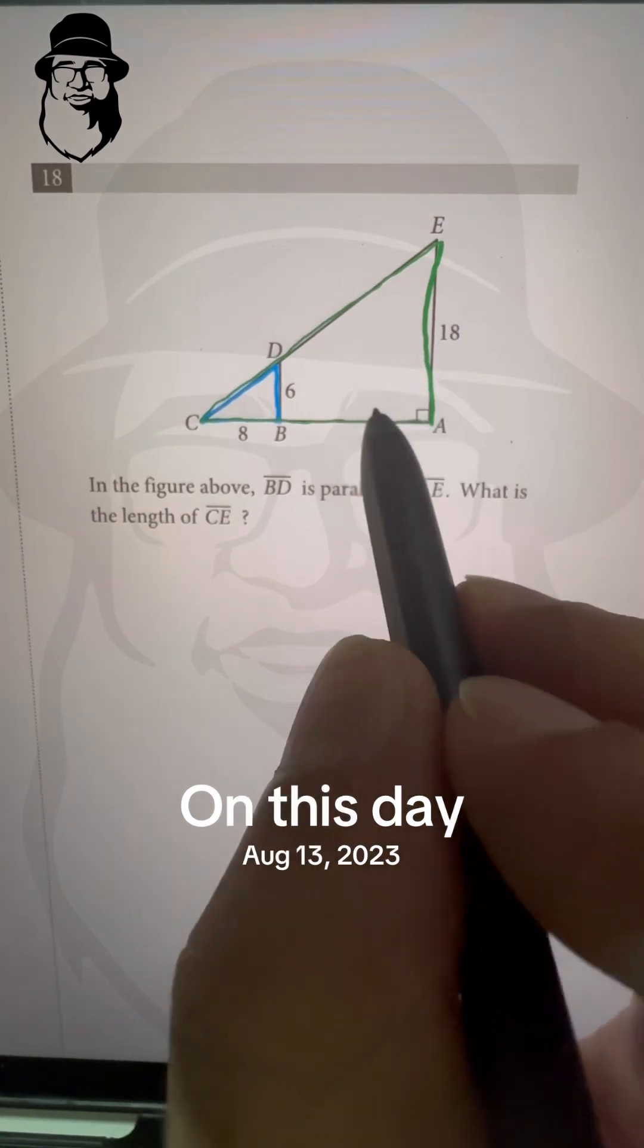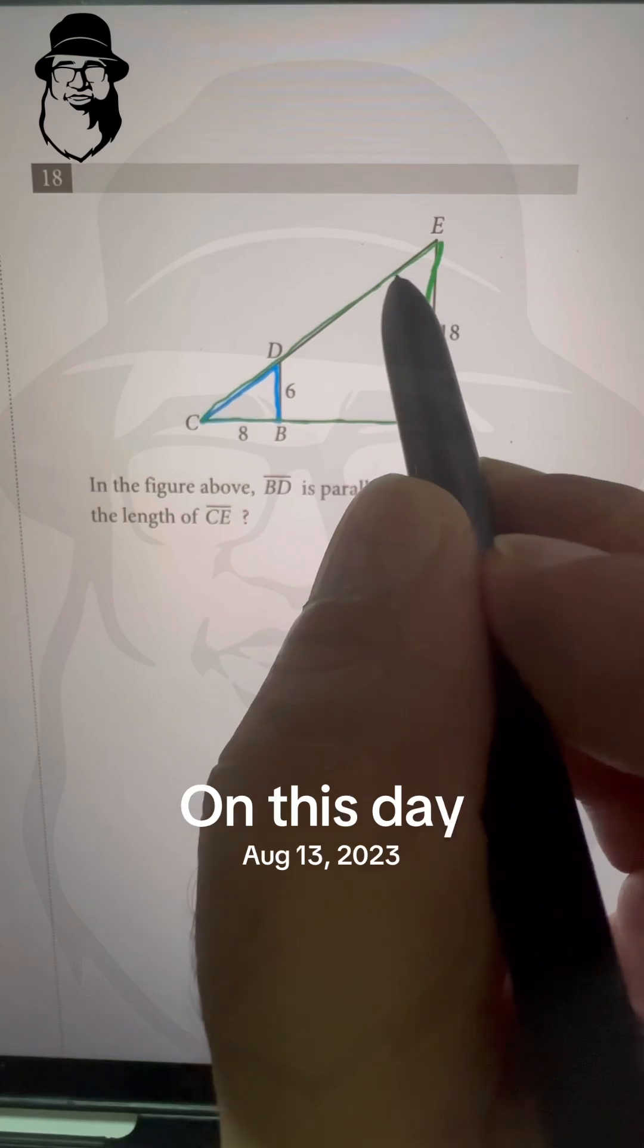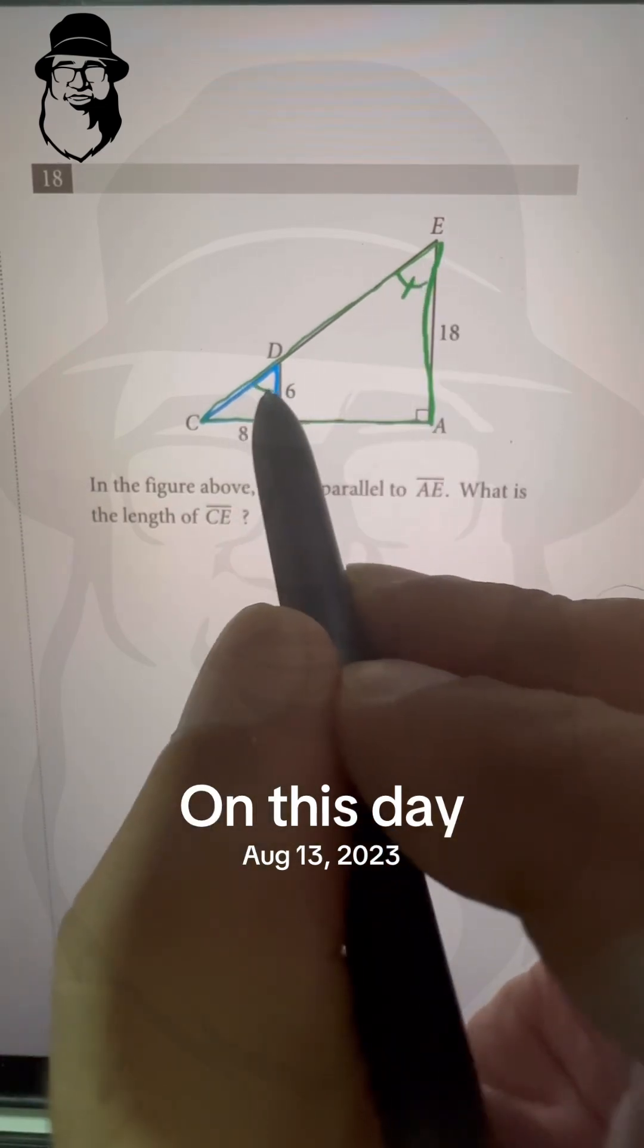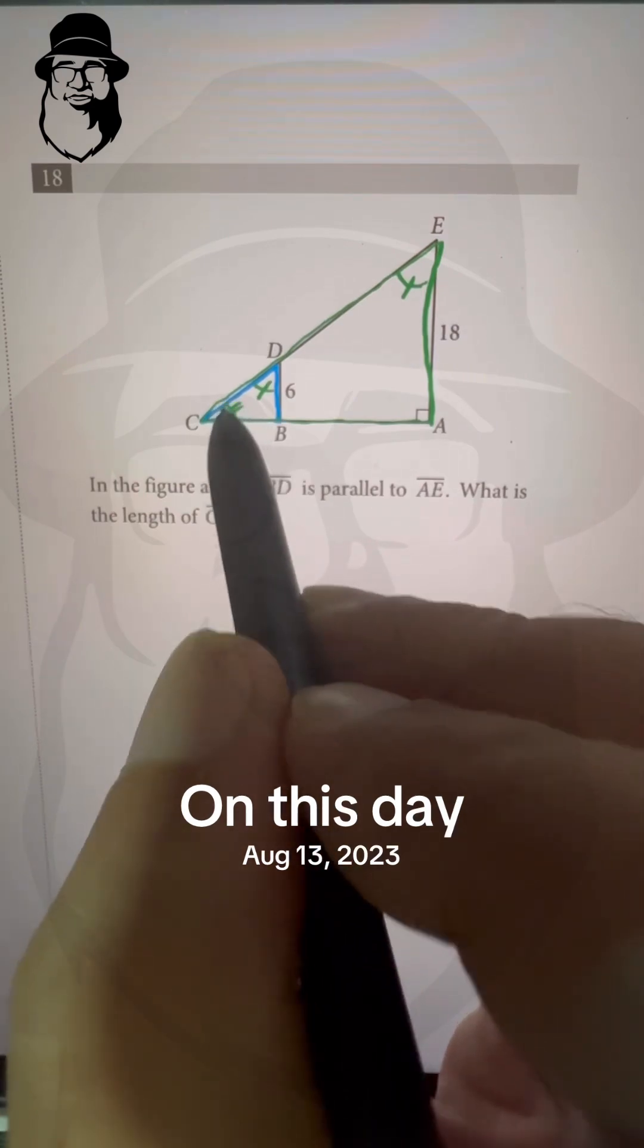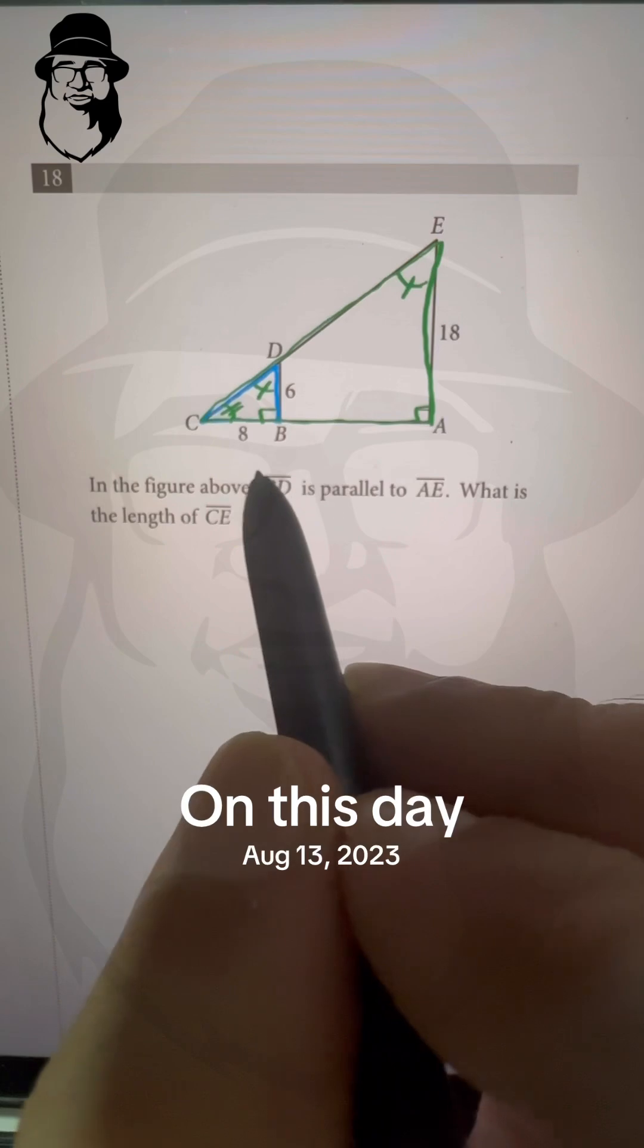Now, in similar triangles, the corresponding angles are equal. This angle is equal to this, and this angle is same in both, and this is 90 degrees angle, this is 90 degrees angle.